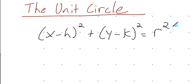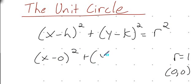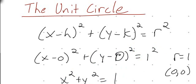The unit circle is nothing more than a circle with a radius of one. So we have a radius equal to one, and it's centered at the origin, which is (0, 0). Filling that in, our equation simply becomes x squared plus y squared equals one. And this is the justification for our unit circle.